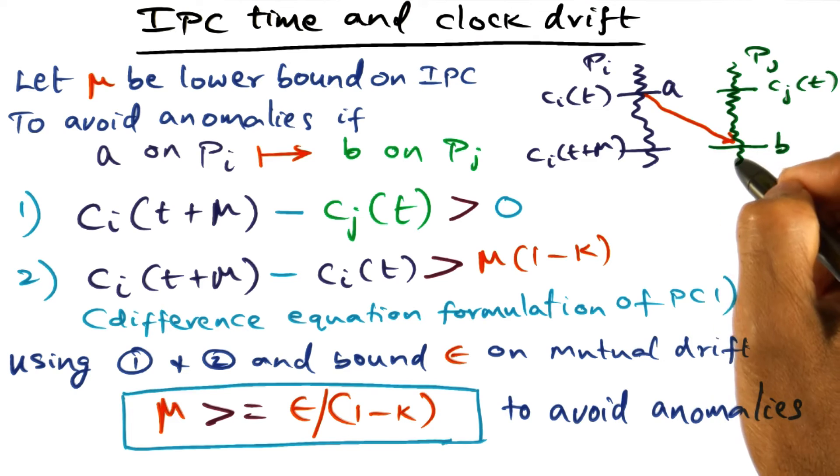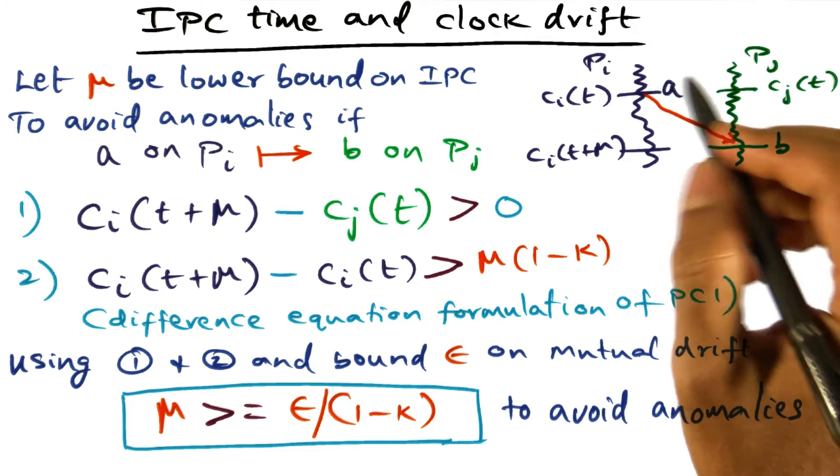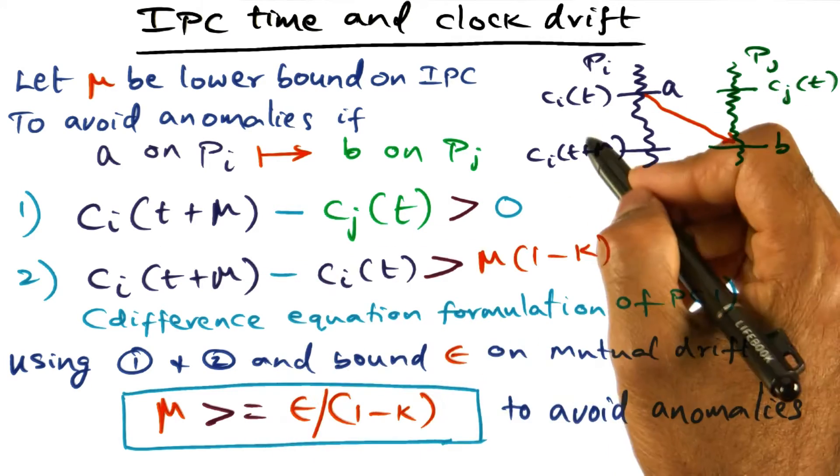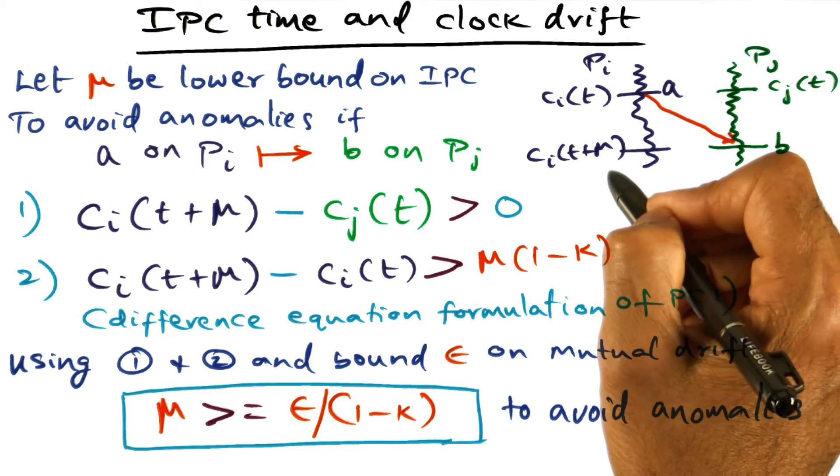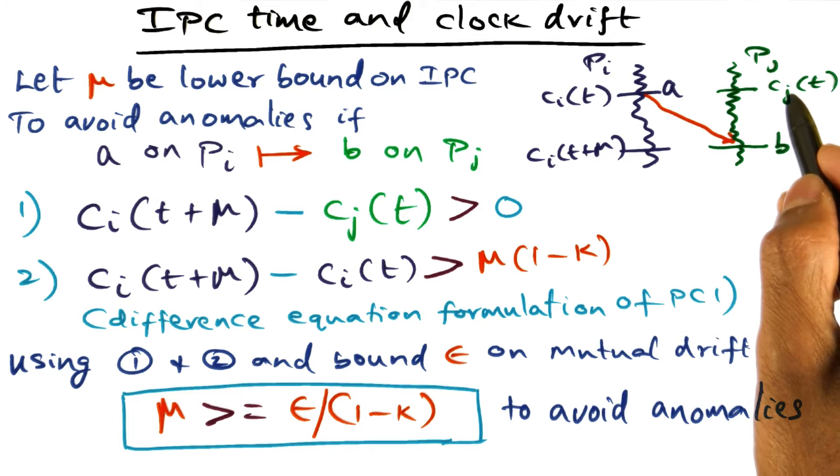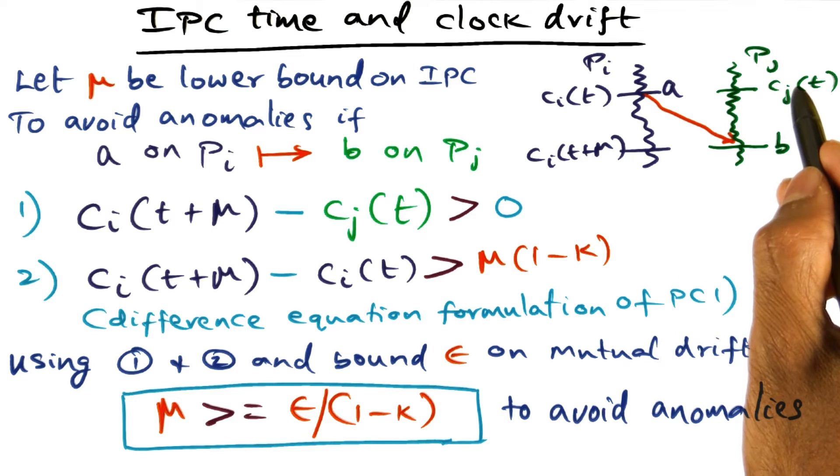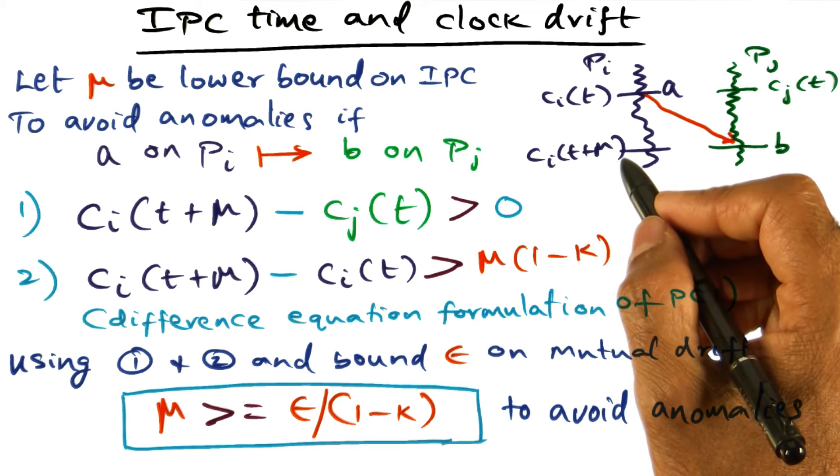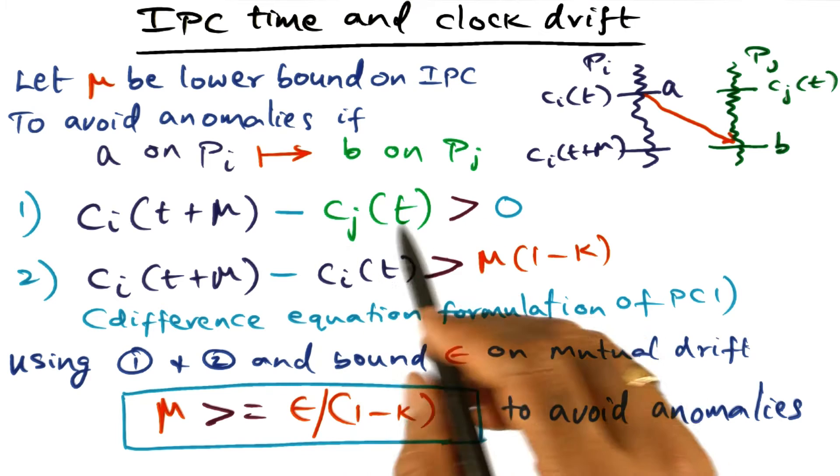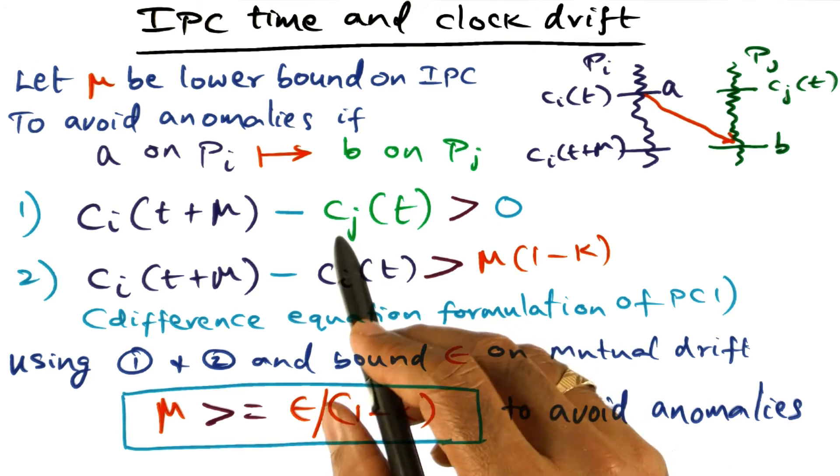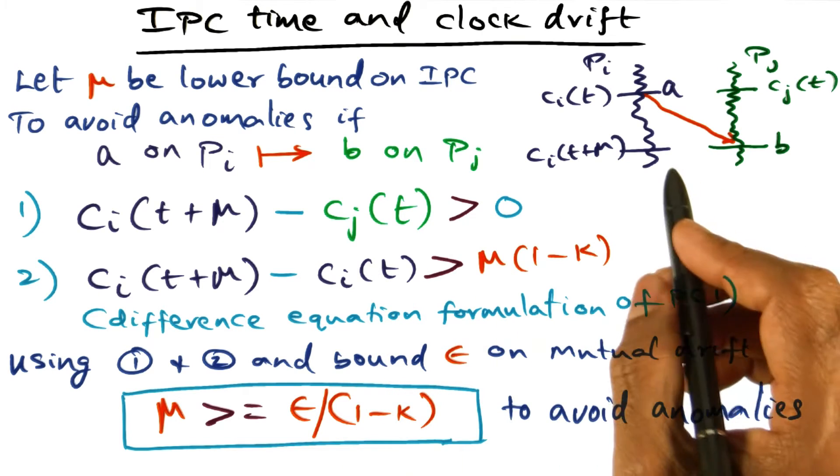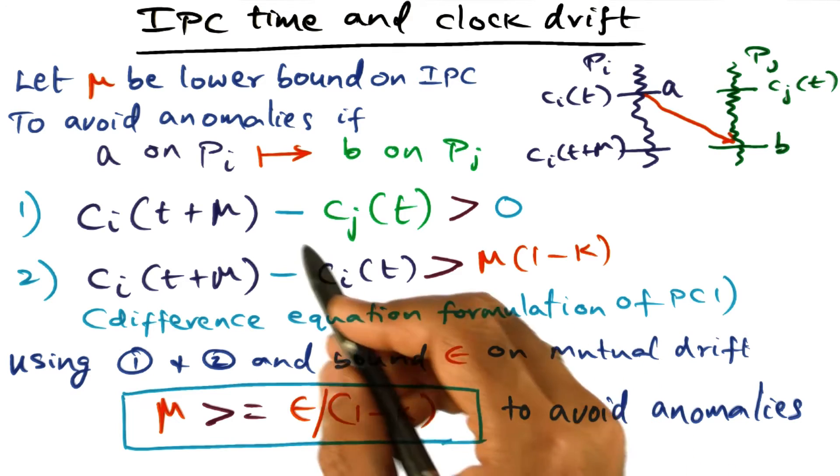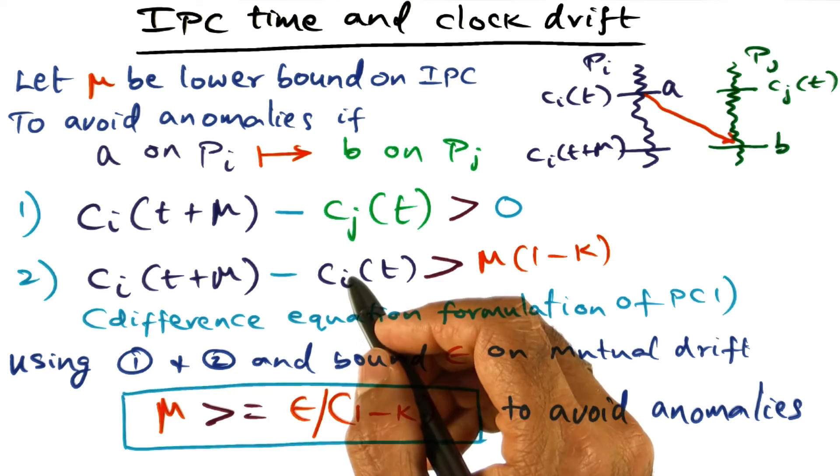So in order for making sure that pj will have a time stamp that is at least greater than ci, you want to make sure that the time reading that I have on my local clock t plus mu should be greater than the time reading at the time that I sent the message. And all that we are saying is, in order to make sure that there is no anomaly, the first condition has to hold that says that the disparity between the two clocks is within this inter-process communication time. That's all this is saying, that the disparity of the mutual drift is within this inter-process communication time.